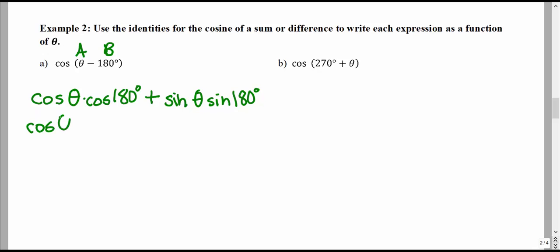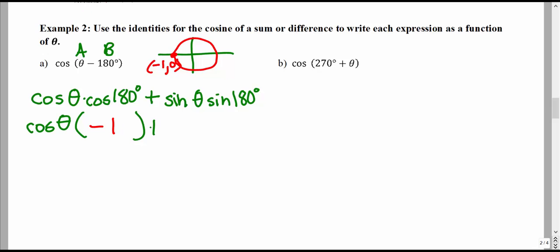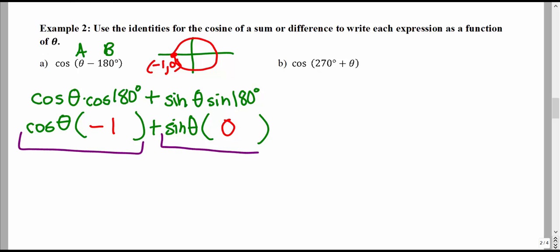We can figure out cosine of 180 degrees using the unit circle. At 180 degrees, the point is (−1, 0), so cosine of 180° is the x-value, which is negative 1. And sine of 180° is the y-value, which is 0. So we have cosine θ times (−1), plus sine θ times 0. Multiplying: cosine θ times −1 is −cosine θ, and 0 times anything is 0. So −cosine θ plus 0 equals −cosine θ.